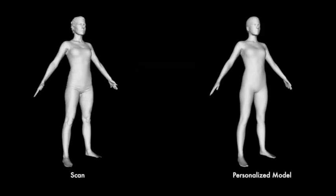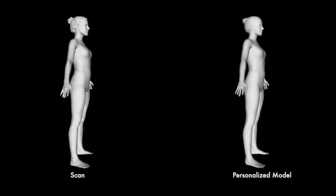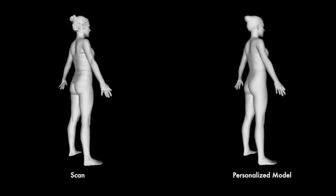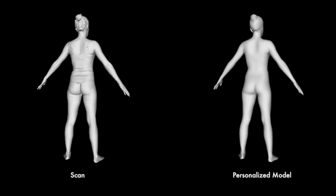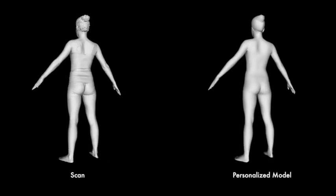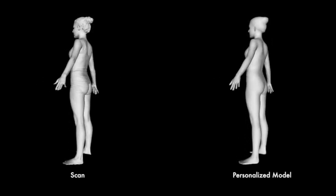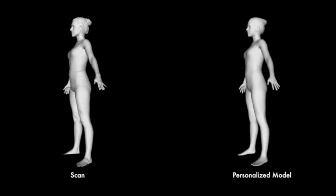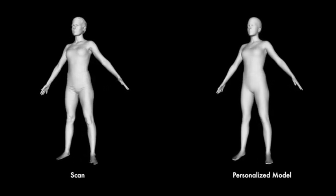The result is the detailed avatar on the right, which captures the shape of the scan on the left. Because it is a parametric model, it can be fully animated, edited, and manipulated. It is no longer a scan, but a true model with a relatively small number of parameters.